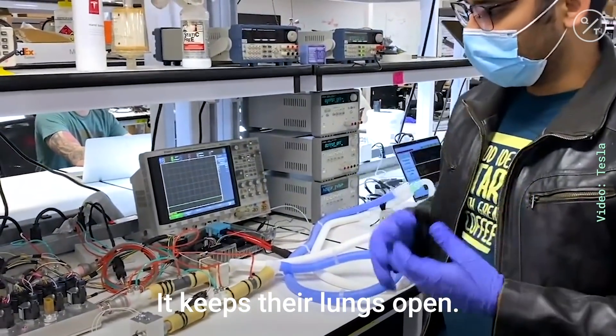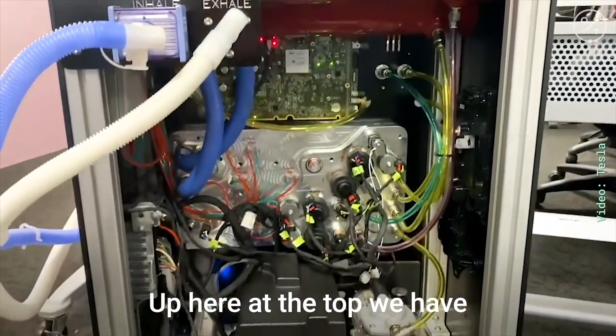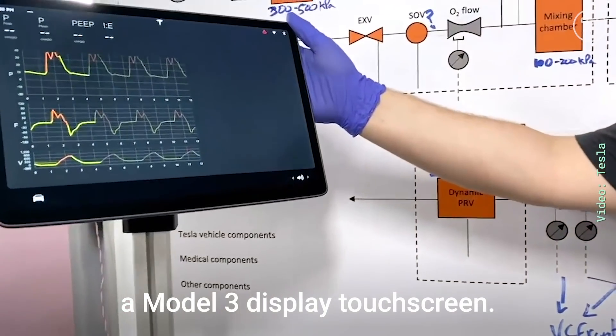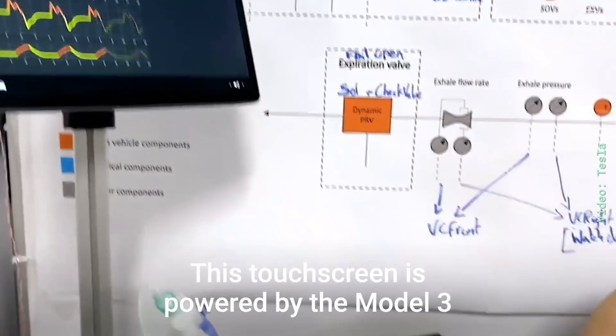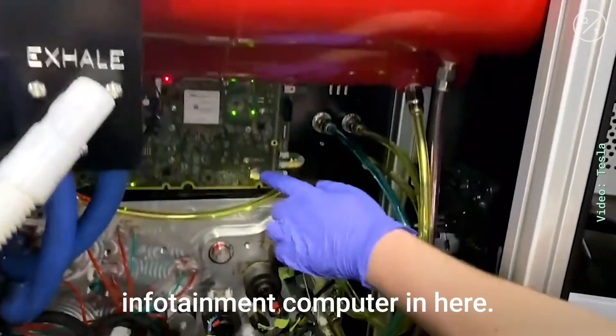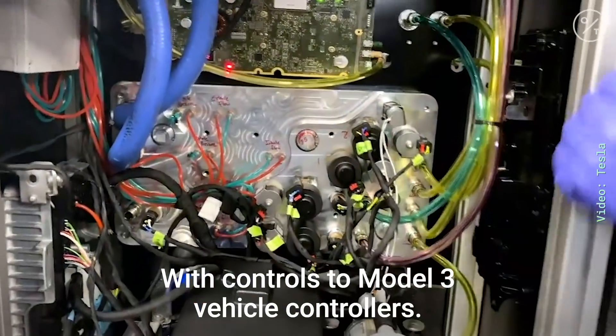This system is powered by the Model 3 infotainment system. Up here at the top we have a Model 3 center display touch screen. This touch screen is powered by the Model 3 infotainment computer in here which controls Model 3 vehicle controllers.